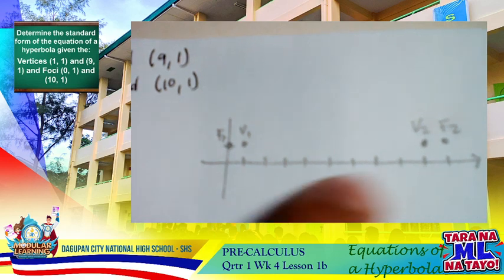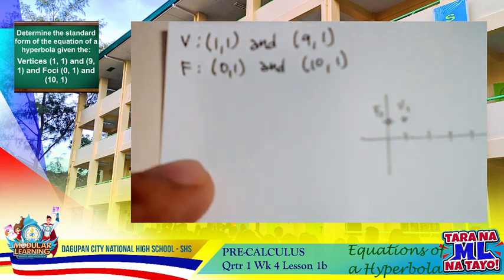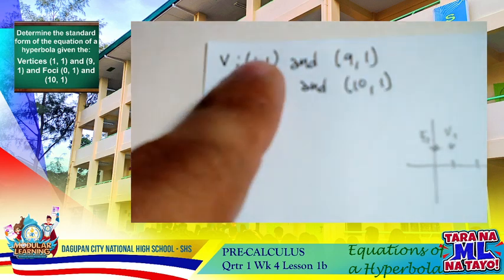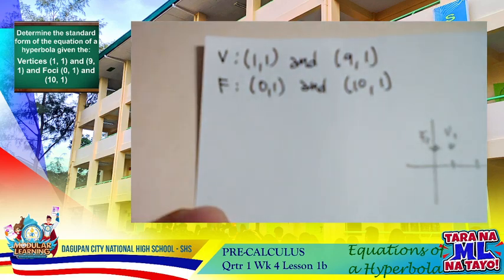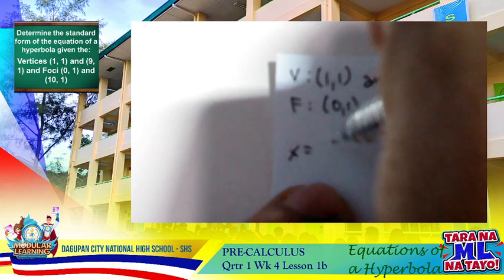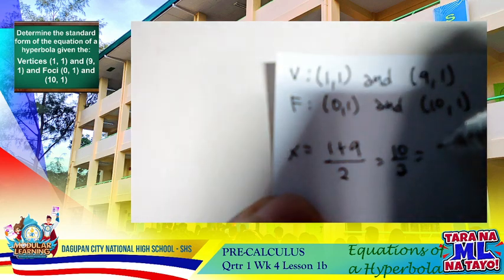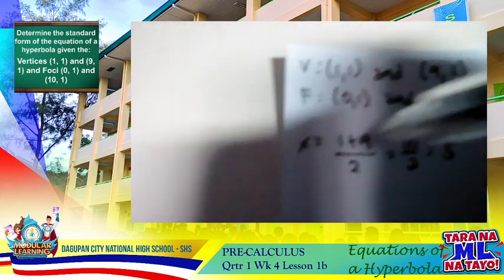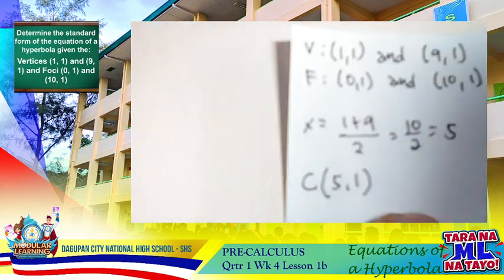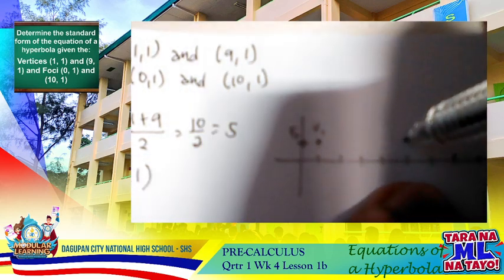This is a horizontal hyperbola. To find the center, we use the midpoint formula. Since both vertices share y = 1, we only need to find the x-coordinate of the midpoint: (1 + 9) / 2 = 10 / 2 = 5. So the coordinates of the center are (5, 1).